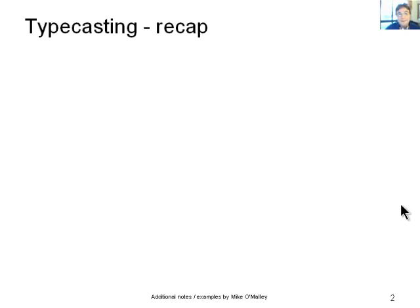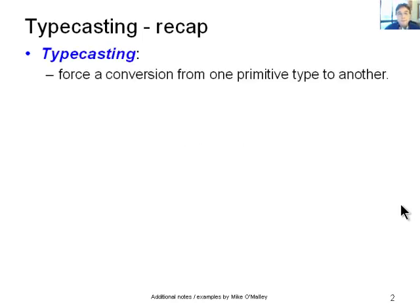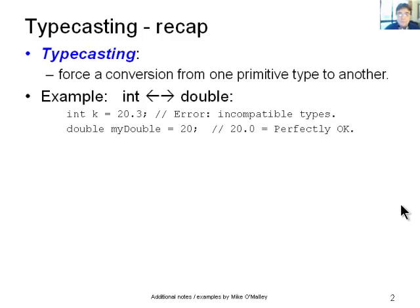Okay, so typecasting, a quick recap. Typecasting is where you force conversion from one primitive data type to another. For example, if you try and declare an integer int k equals 20.3, that'll give you a compilation error, incompatible types. An integer can't contain a floating point number.